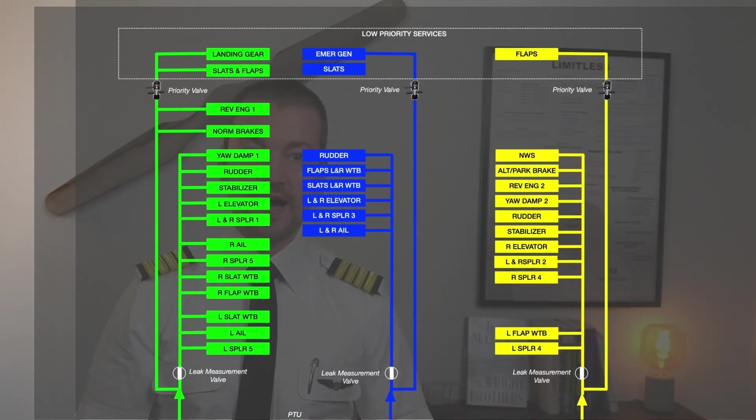You will also find that the flight controls are divided between left and right, and some of them are even triple connected to allow for redundancy, such as rudder. Rudder you'll find on all three.